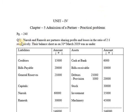Question number 3, page number 240. Naresh and Ramesh are partners sharing profits and losses in a ratio of 2 is to 1. The partners are Naresh and Ramesh. What is the profit sharing ratio? 2 is to 1, so 2 plus 1 becomes 3.